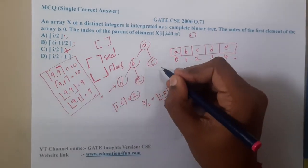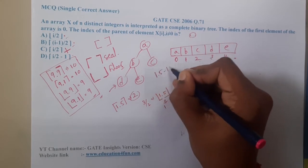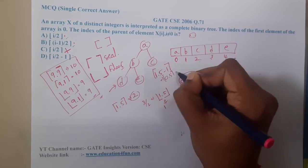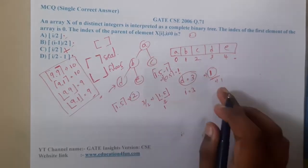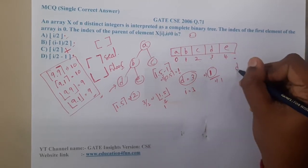Similarly moving on to option D. If you take ceil value of i by 2, it is 1.5 minus 1 ceil value. So it is 0.5 ceil value which is 1. So for this is also satisfying.